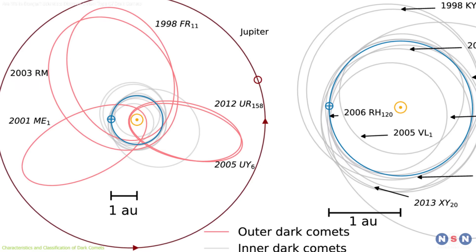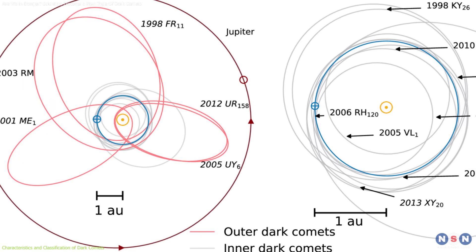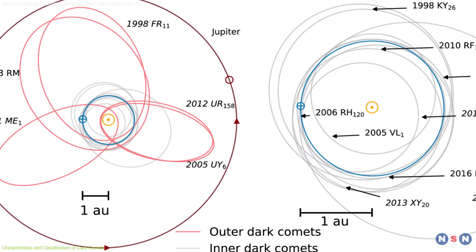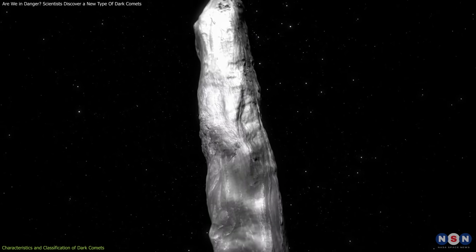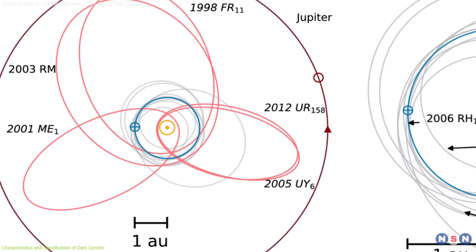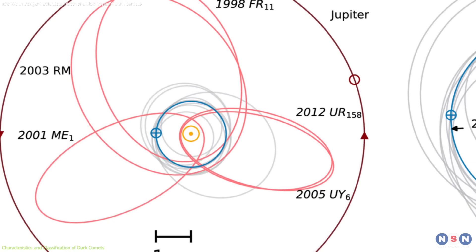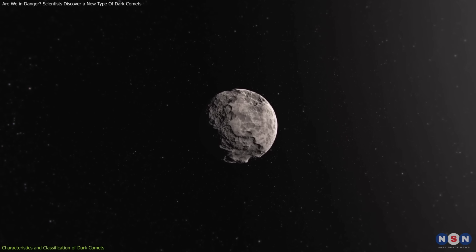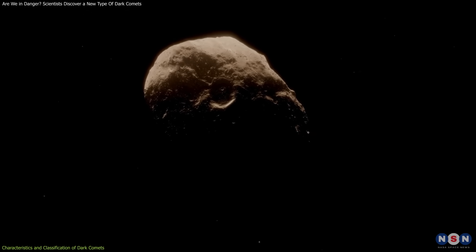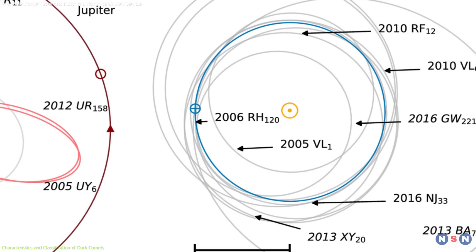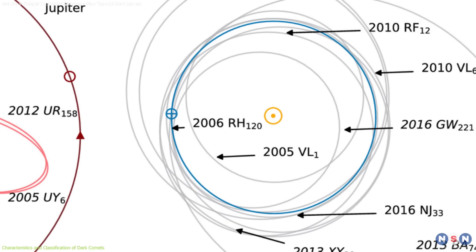Astronomers have identified two main types of dark comets, outer and inner. Outer dark comets are larger, measuring hundreds of meters in diameter, and have elongated orbits resembling those of Jupiter family comets. Inner dark comets, on the other hand, are smaller, usually tens of meters across, and follow nearly circular orbits in the inner solar system.